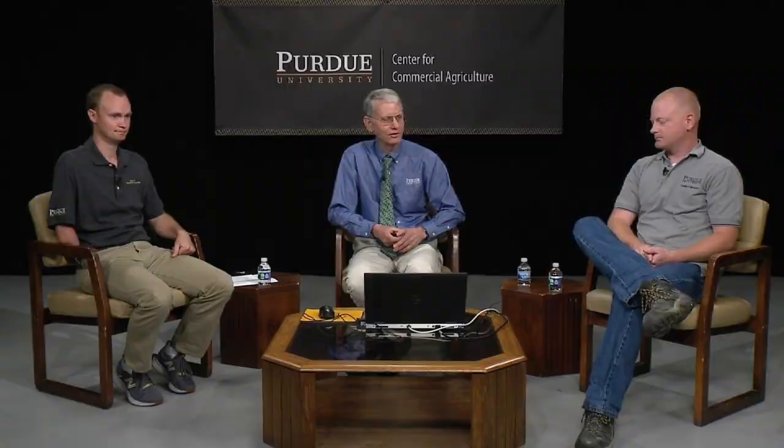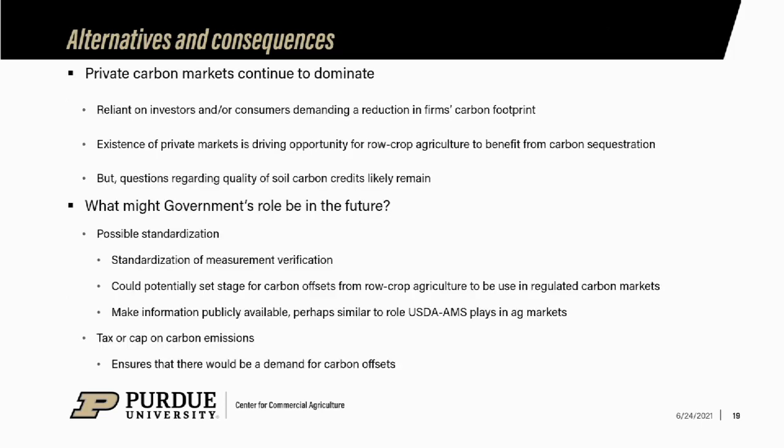There's also the contract enforcement issue — it's a little unclear how that's going to play out. If you violate one aspect of the contract, what does that mean? Especially as it relates to tillage. This is all about climate change, and as the climate gets more variable — higher rainfall, more rutting, difficulty getting cover crops in — there's going to be an increasing amount of variability in whether you're actually able to comply with these contracts.